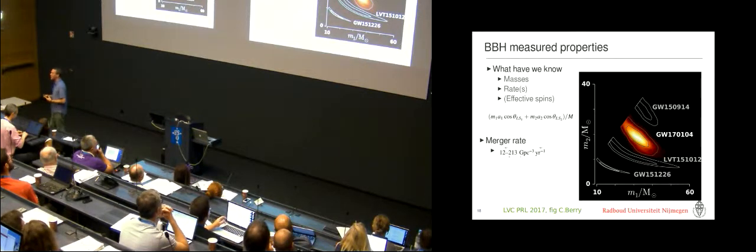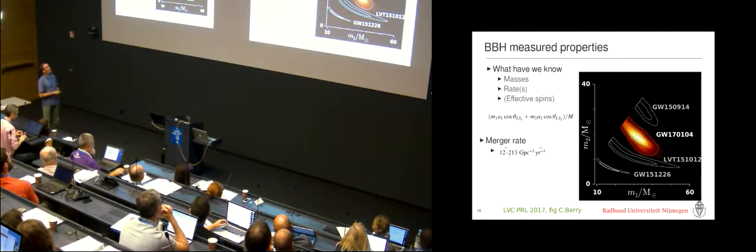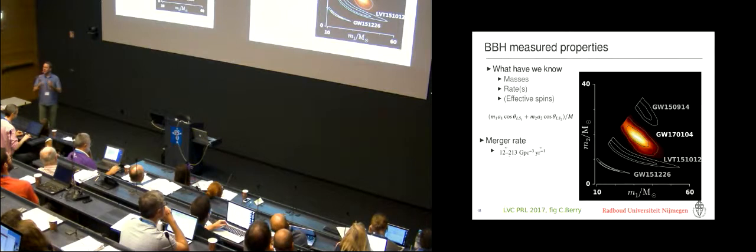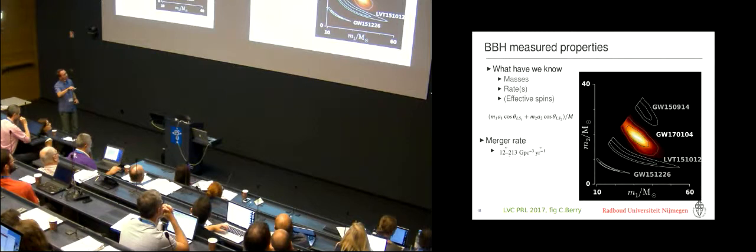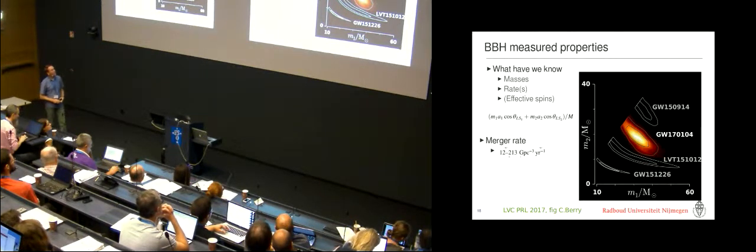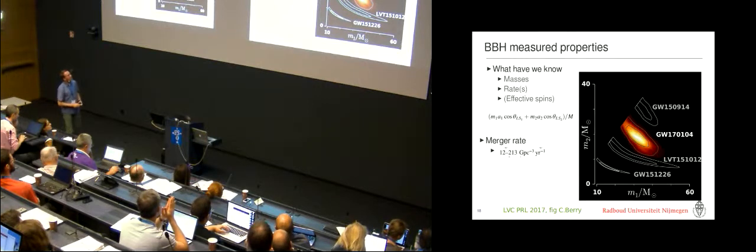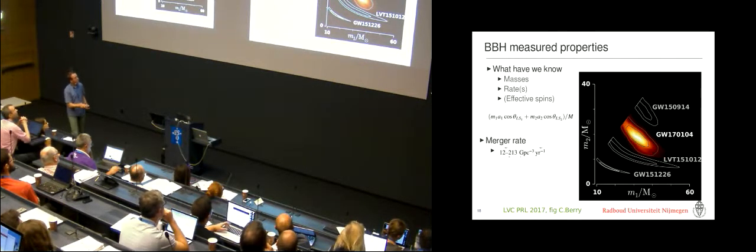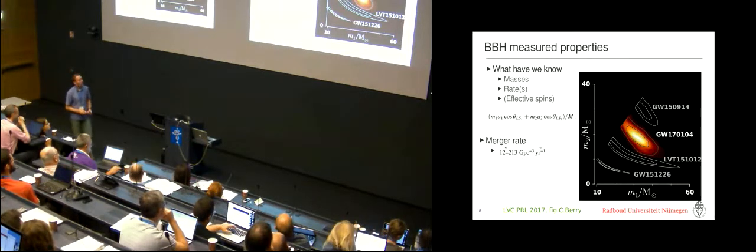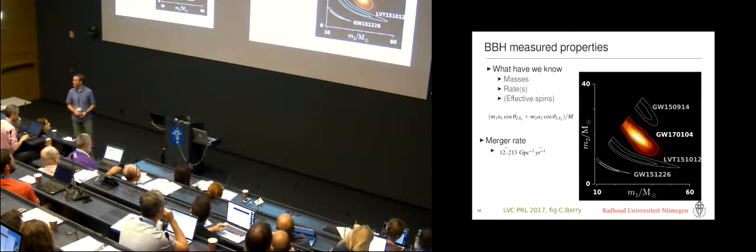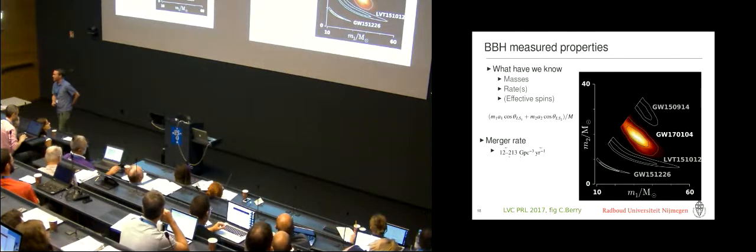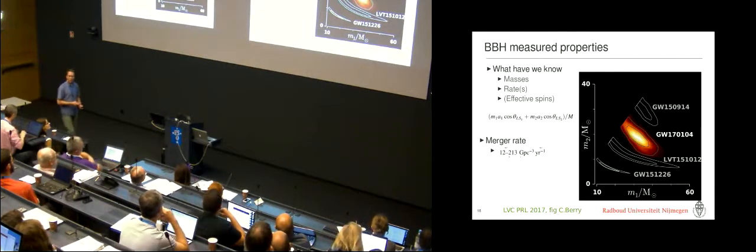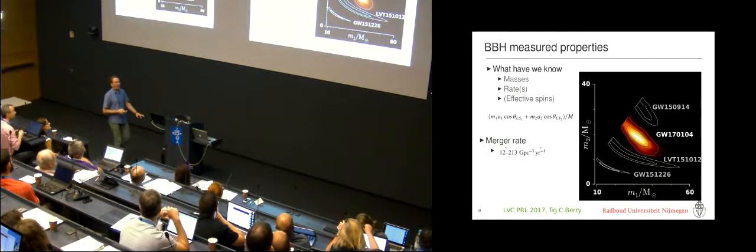What did we measure? From the gravitational waves you get an indication on the masses. This combination of masses that's called the chirp mass which essentially if you plot it in M1 versus M2 has these sort of banana shapes. Some information on the rates and the effective spin but we'll get to that in a minute.